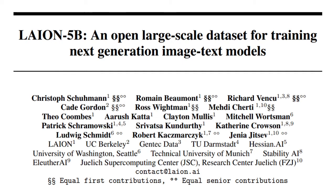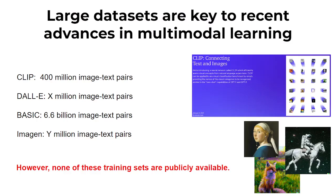Welcome to LAION-5B, an open, large-scale dataset for training the next generation of image-text models. Large datasets are very important for training large multimodal models like CLIP, DALI, ImageGen, and BASIC. But sadly, such huge datasets are not publicly available.